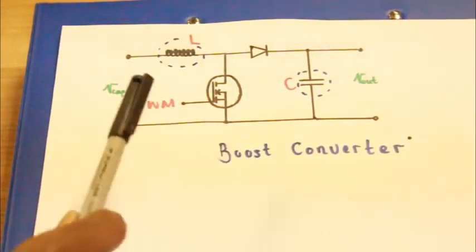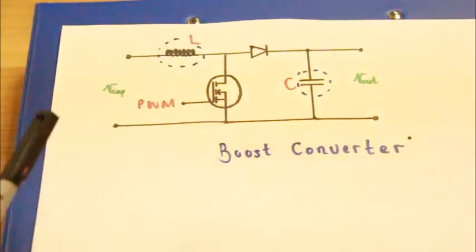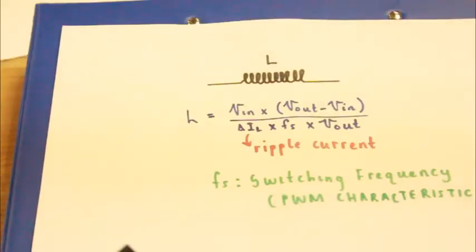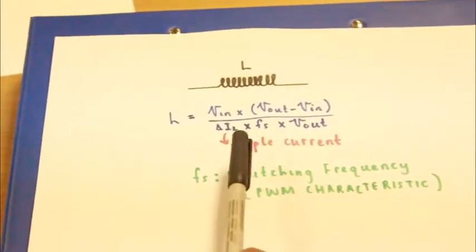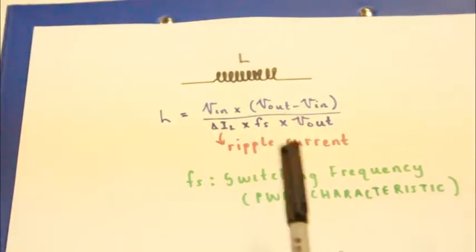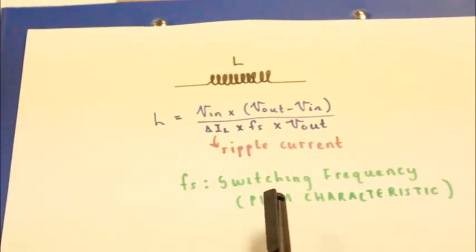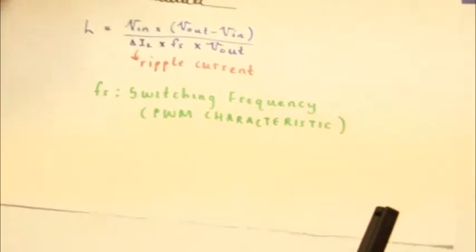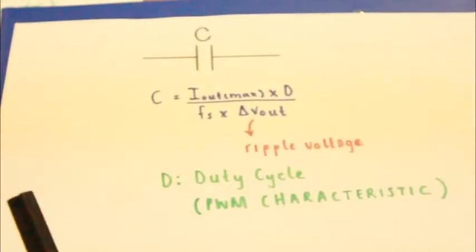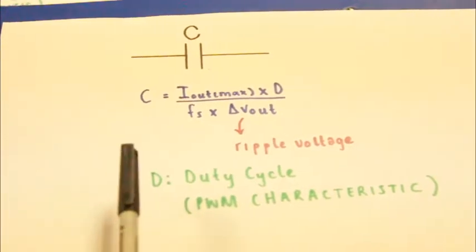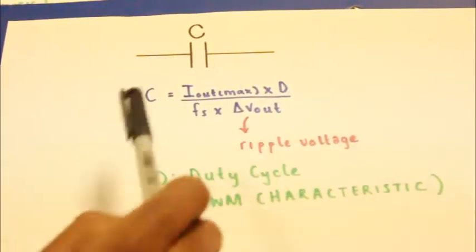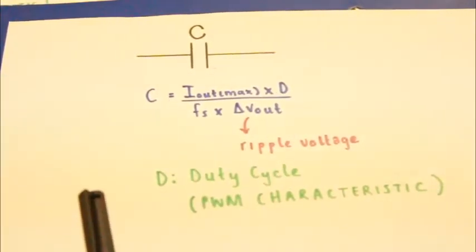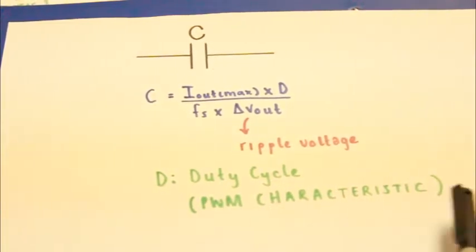The boost converter has two delicate components: the inductor and the capacitor. In designing the inductor, the main factors to look at are the ripple current and the switching frequency, which is a PWM characteristic. The capacitor caters for the ripple voltage and takes in the duty cycle as a parameter, which is part of the PWM.